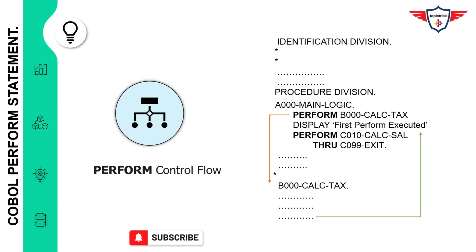If a GO TO statement is used inside paragraph B000-CALC-TAX, control will not return to the calling paragraph — it will go to the paragraph specified in the GO TO. However, if a PERFORM statement is used inside B000-CALC-TAX, control will go to the specified paragraph, execute all statements there, and then return to the main calling paragraph A000-MAIN-LOGIC, where the next statement to execute is the DISPLAY statement.